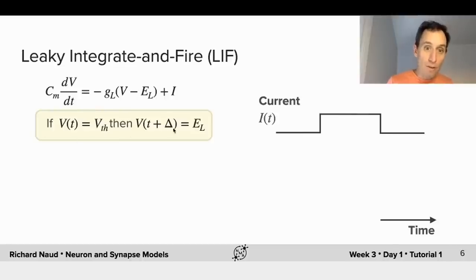And we have a threshold condition. The threshold condition is such that whenever the membrane potential reaches the threshold, we will stop the dynamics and restart the dynamics only a time delta later. This delta is the absolute refractory period.